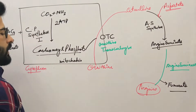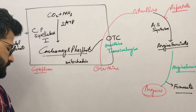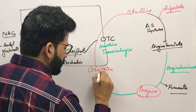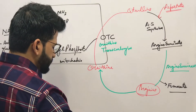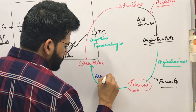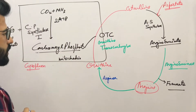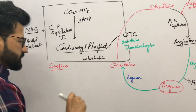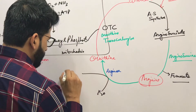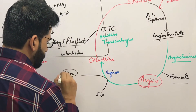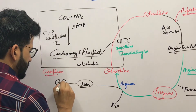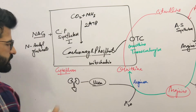Argininosuccinate is then converted to arginine, and here fumarate is released. Arginine, with the help of the enzyme arginase, converts to ornithine. H2O is added and urea is made, which goes to the kidney and is excreted with urine.